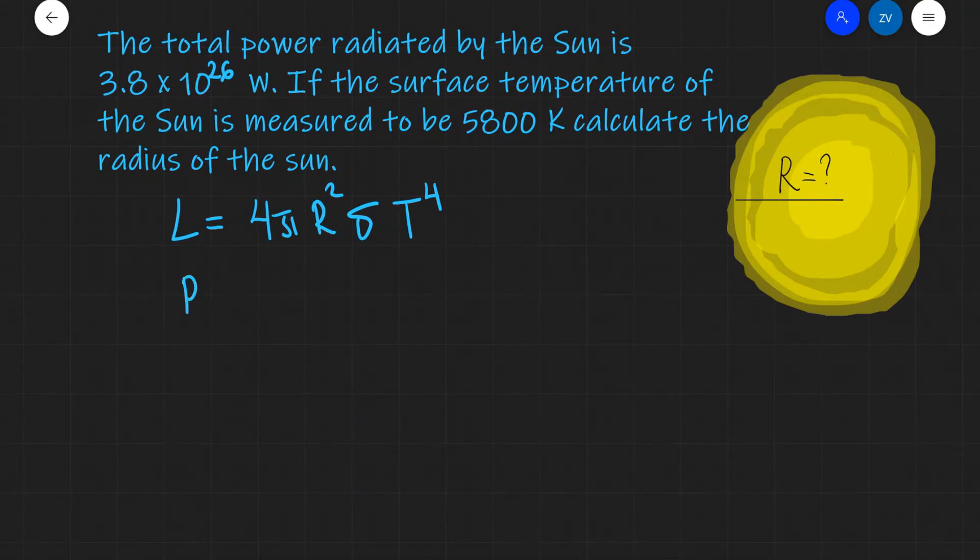So, R² is going to equal L divided by 4π times sigma, which is the constant, times the temperature raised to the power of 4. Now, what I'm going to do then is I'm just going to square root the entire expression over here. And now, I'm ready to plug in some numbers into this expression.